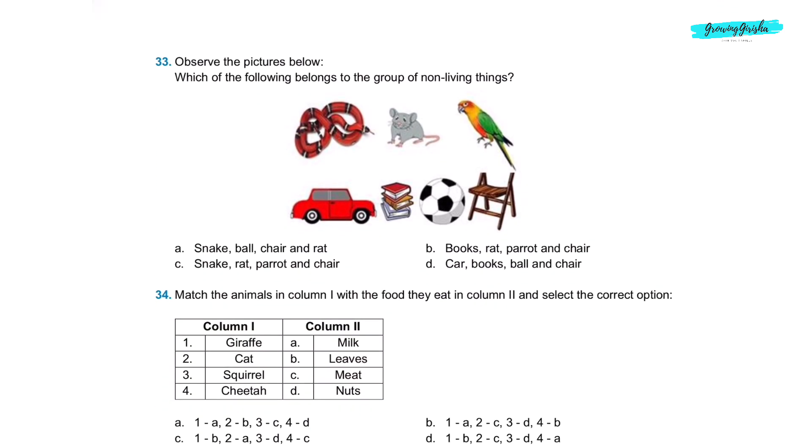Question 33. Observe the pictures below. Which of the following belongs to the group of non-living things? Option D, car, books, ball and chair. Option D is the correct answer.